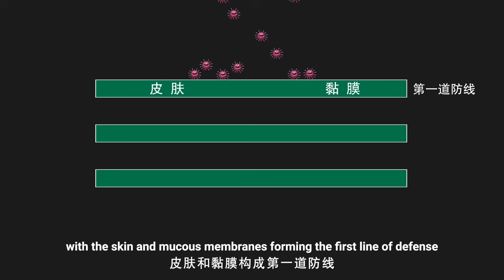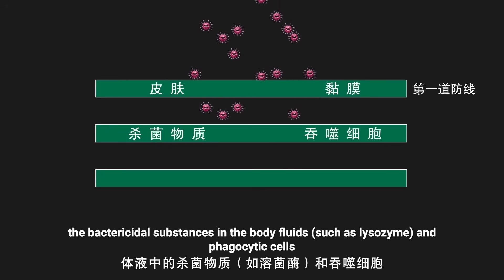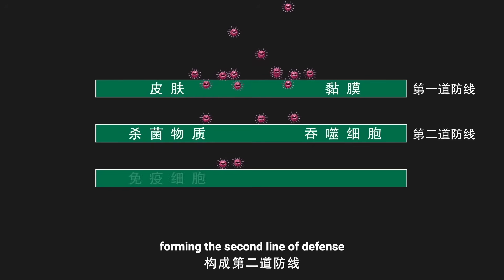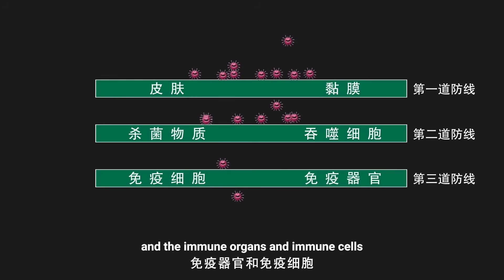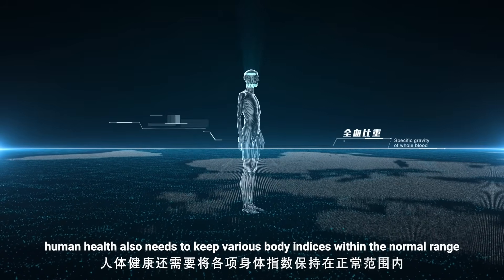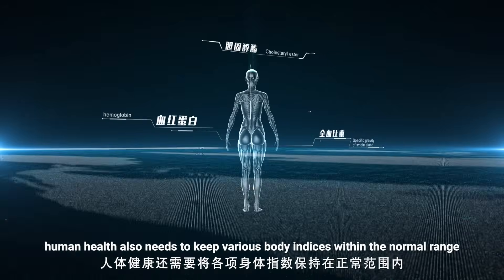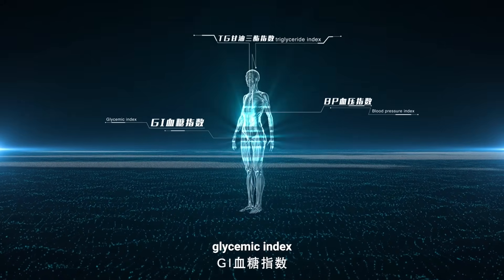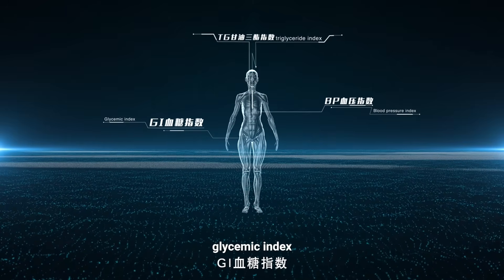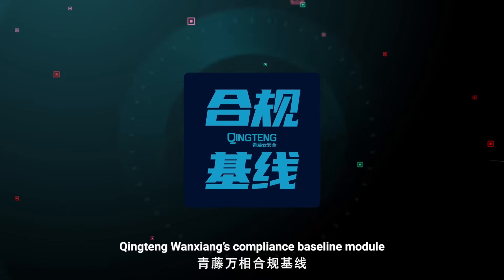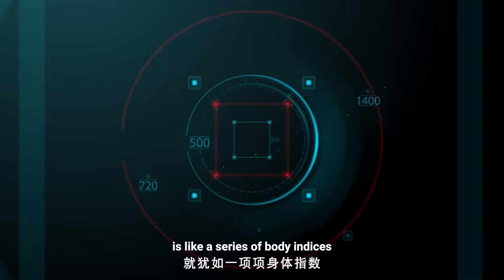The skin and mucous membranes form the first line of defense, bactericidal substances in body fluids and phagocytic cells form the second, and immune organs and immune cells form the third. Human health also requires keeping various body indices within normal range — such as blood pressure, glycemic index, and triglyceride index. Qingtang's compliance baseline module works like these body indices, ensuring systems stay within healthy parameters.